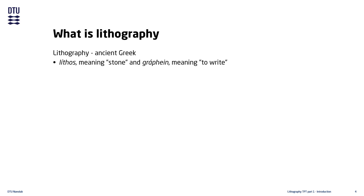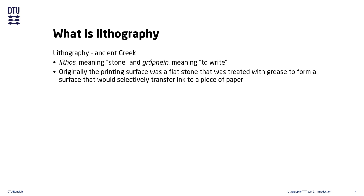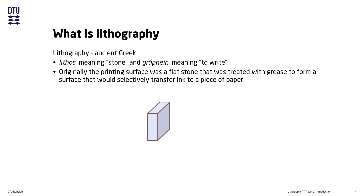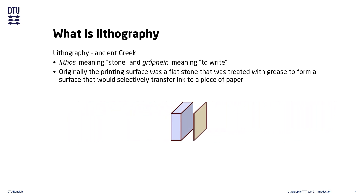The name lithography originates from ancient Greek and is a combination of the words for stone and to write. Lithography is essentially a method for transferring a pattern from one surface to another. Originally, the surface used for transferring the pattern was a flat stone that was covered with a grease film, and a pattern was then made in the grease film and the surface was dipped in ink.